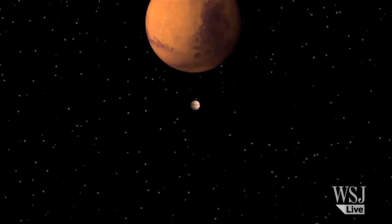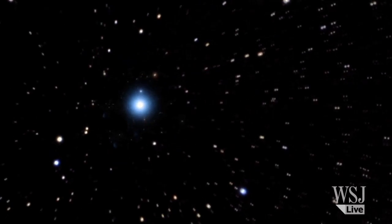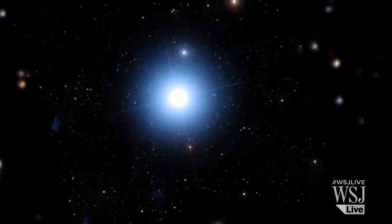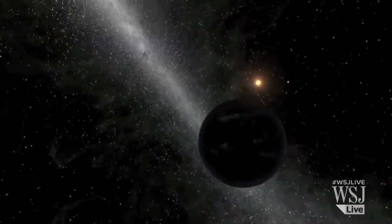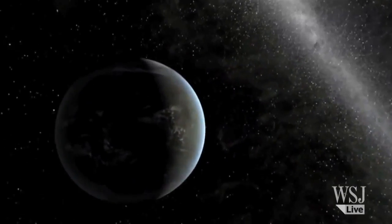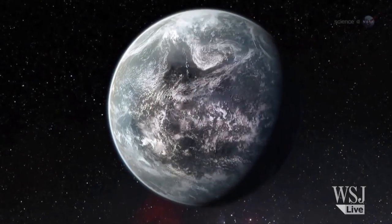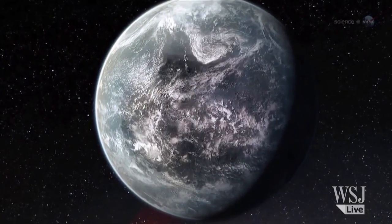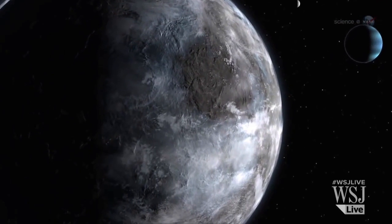NASA already has some indications of possible extraterrestrial life. Its Kepler mission has discovered more than a thousand planets outside our solar system and the list is ever growing. Some of these planets are believed to be Earth-like with a rocky surface and mild climate that could support life.